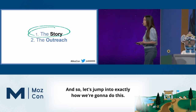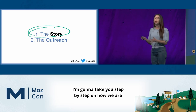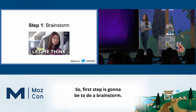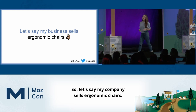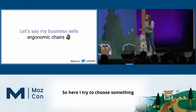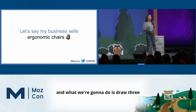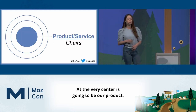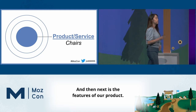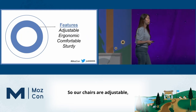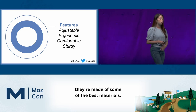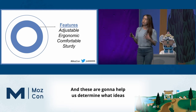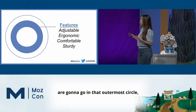I'm going to take you step by step on how we are going to create a research report that is link worthy. First step is going to be to do a brainstorm. Let's say my company sells ergonomic chairs — I chose something that's not the most sexy product out there. What we're going to do is draw three concentric circles. At the very center is going to be our product, which is chairs. And then next is the features of our product — so our chairs are adjustable, very comfortable, made of some of the best materials.